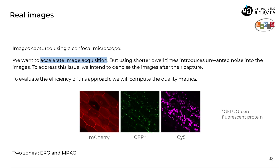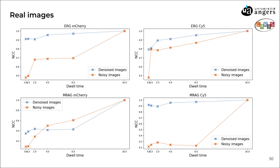We took images at two different parts of the plant: the first part is called ERG, and the second part is MRAG. We acquired images with different dwell times and then denoised them. We plotted the evolution of the NCC depending on the dwell time for different fluorophores and different parts of the plant. Apart from the M-Cherry protein in MRAG, the NCC for the denoised images is always higher than for the noisy images. For M-Cherry in ERG, this method is very efficient: for the denoised image taken at a dwell time of 0.16 microseconds, we have a better NCC than for the original image taken at 8 microseconds — meaning we can use a dwell time 50 times smaller and still get a better result.